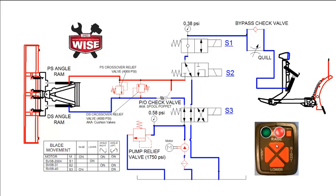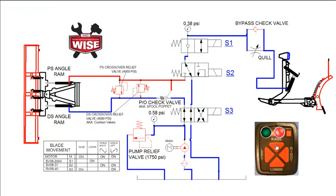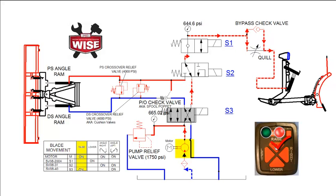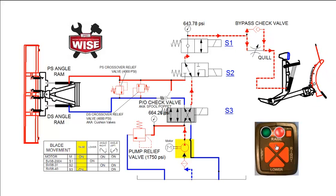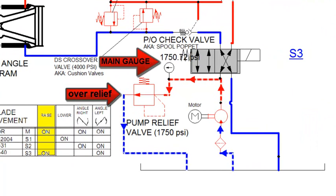The primary function of a relief valve is to protect the hydraulic system from excessive pressure. We use direct acting relief valves that divert fluid either to the opposing cylinder or directly back to tank. In this example, we will demonstrate how and when the pump relief kicks in to protect the system. Pushing the raise button on the control activates the pump, sending high pressure fluid to the lift ram, raising the plow. Once the plow is fully raised, the pressure will build to the pump relief setting and bypass directly to tank.